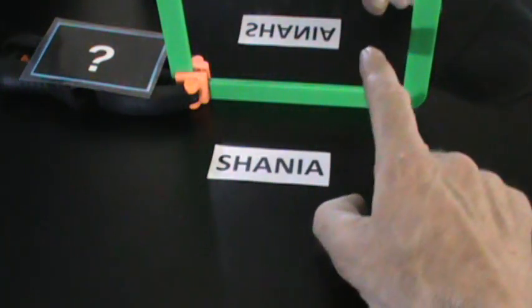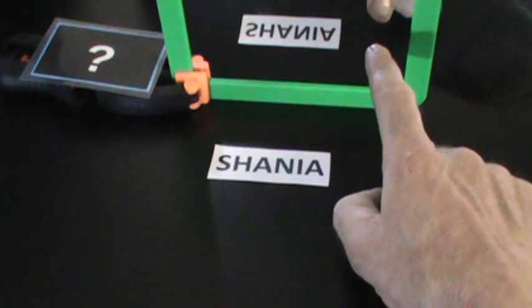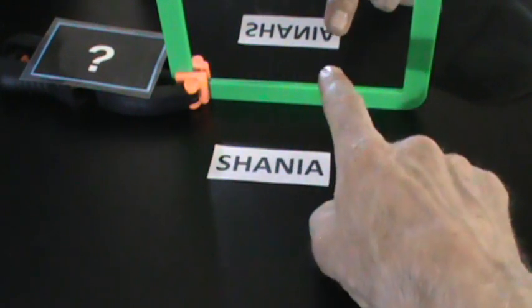Let's try another one. Here's a name: Shania. And the reflection—the illusion—it gets flipped. But this is reality, upright.